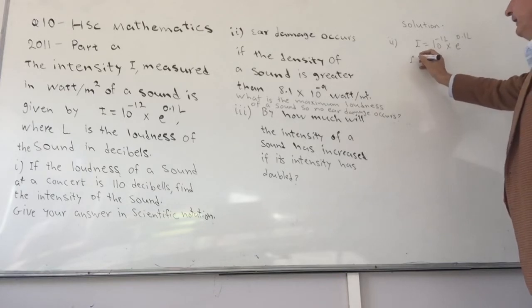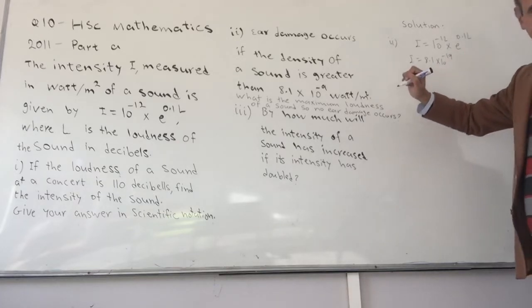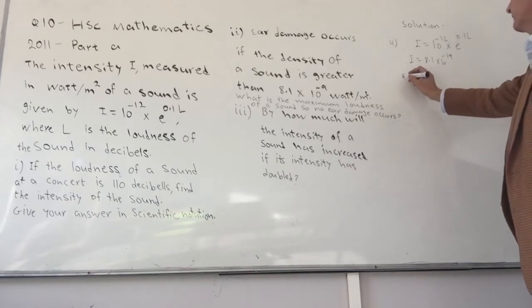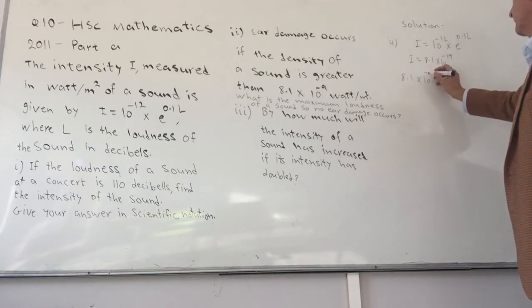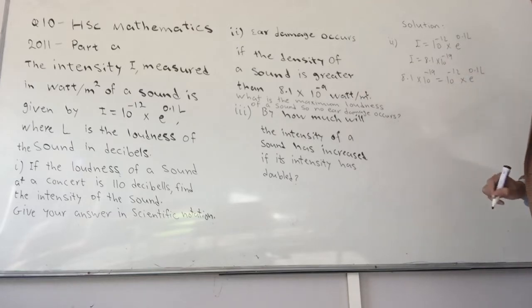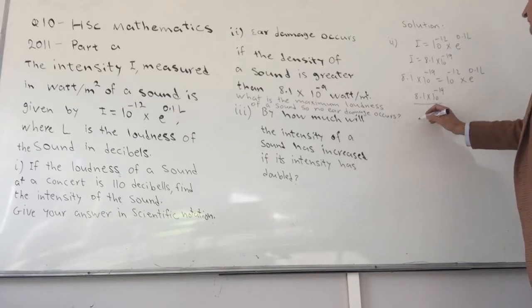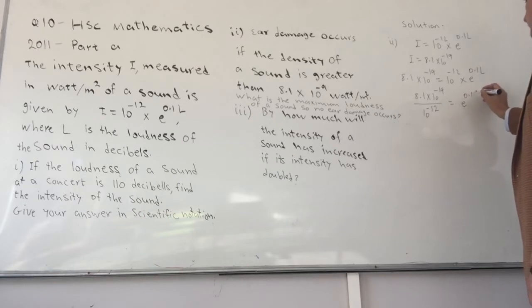The value of I they have given us is 8.1 times 10 to the minus 9. So 8.1 times 10 to the minus 9 equals 10 to the minus 12 times e to the 0.1L. Dividing both sides by 10 to the minus 12 gives us 8.1 times 10 to the minus 9 over 10 to the minus 12 equals e to the power of 0.1L.